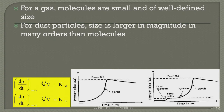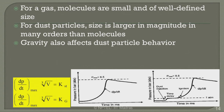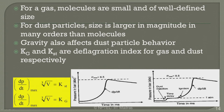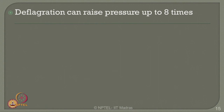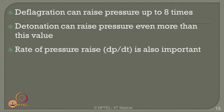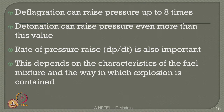Gravity plays a very important effect because dust particle behavior is significantly affected by gravitational pressure. Equations for estimating pressure in bar arising from pressure gradient are a function of K_g and K_st, where K_g is called the deflagration index for gas and K_st is the deflagration index for dust, given by the equation where V is the volume of expansion in the container. Deflagration can raise pressure up to 8 times, whereas detonation can raise pressure even more. The rate of pressure rise, dp/dt, is also an important factor in estimating damage from energy release.